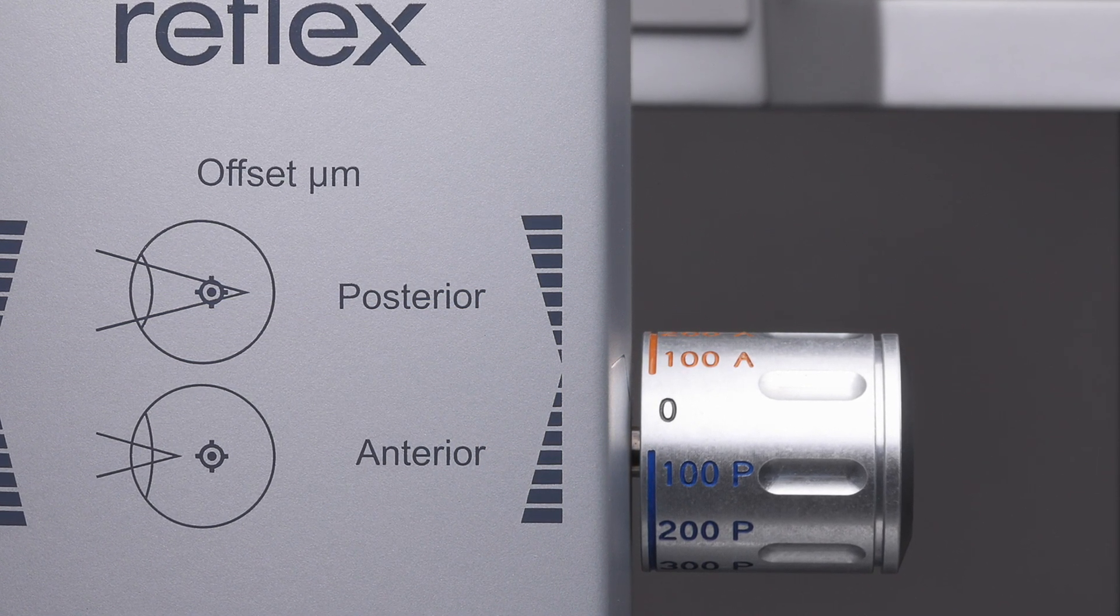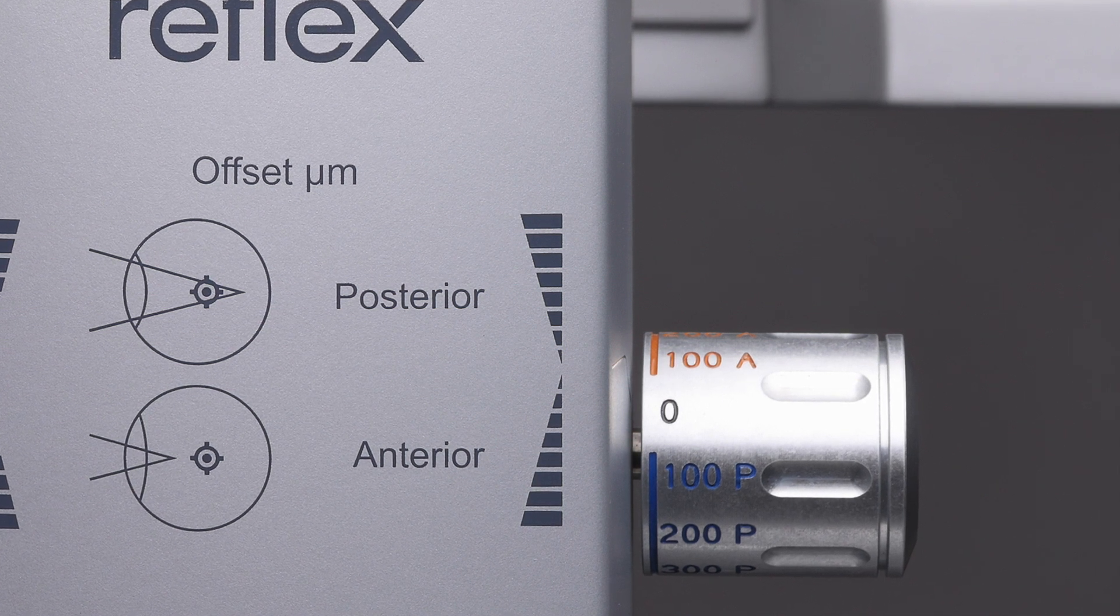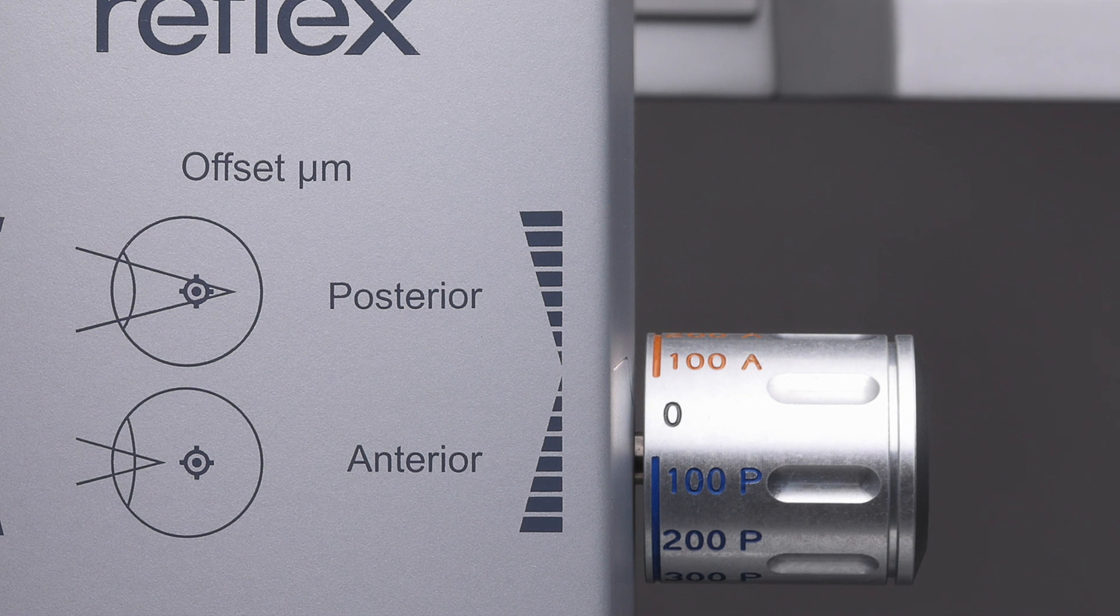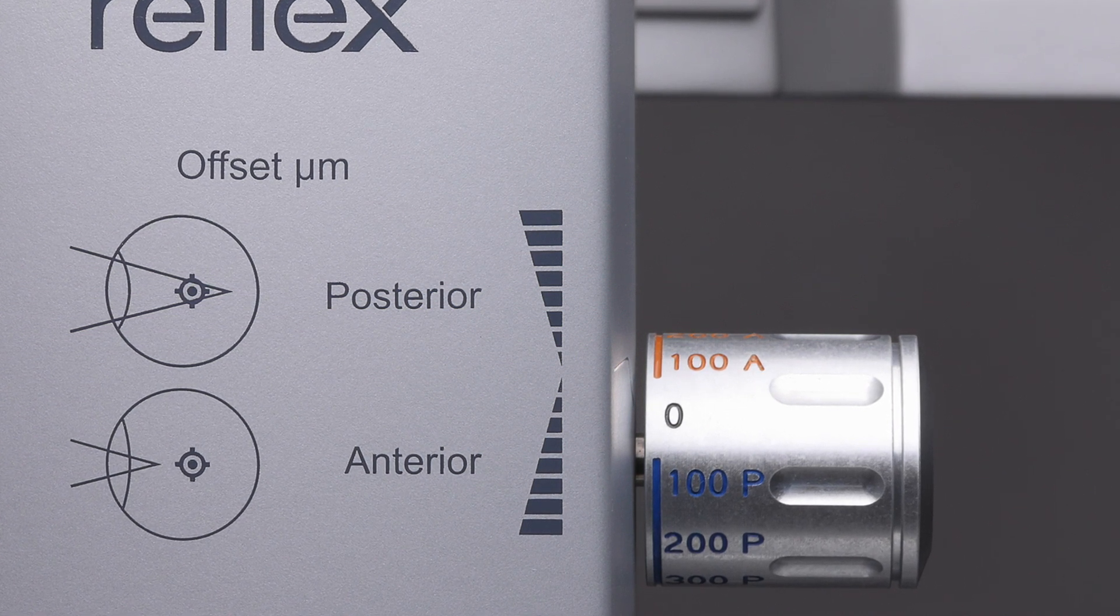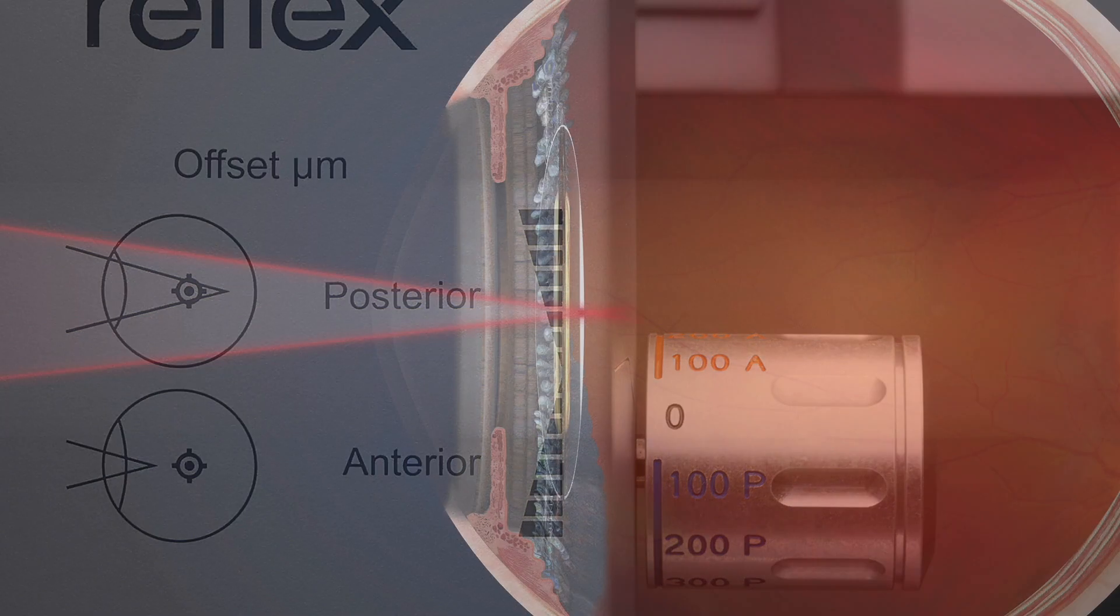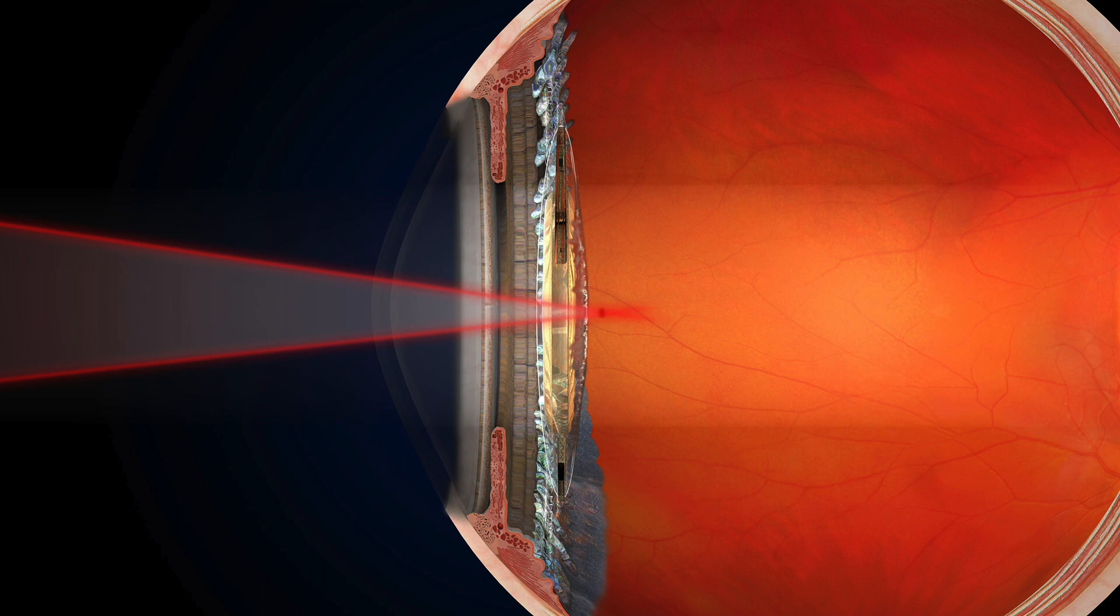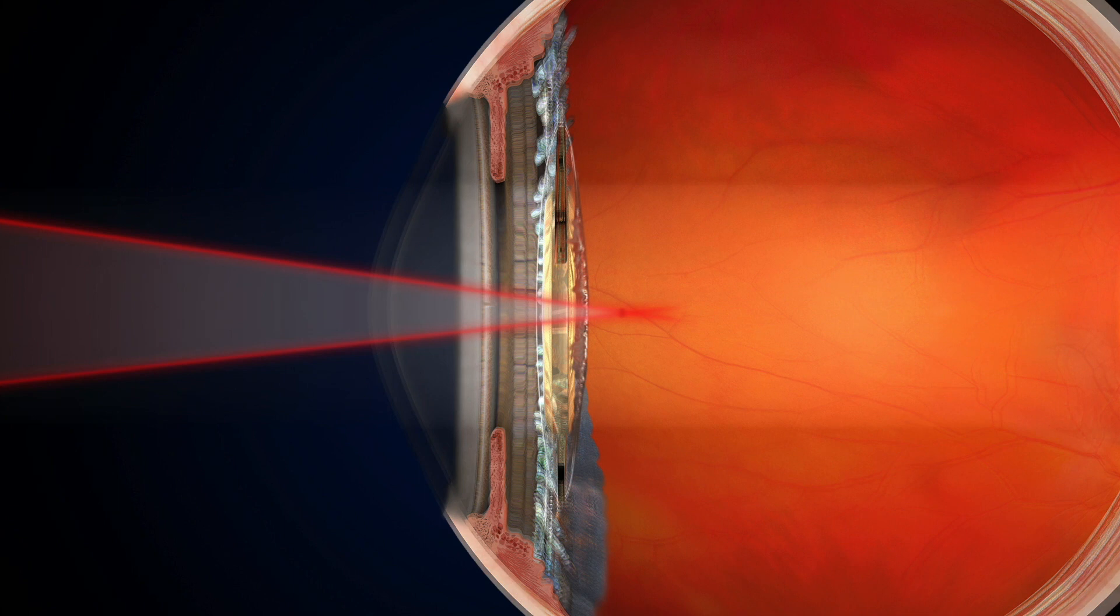Many lasers include a manually controlled offset allowing you to move the treatment beam posteriorly towards vitreous by 0.1 to 0.5 millimeters. I personally do not use this option but focus the laser manually 1.5 to 2 millimeters behind the capsule by moving the slit lamp towards the patient. Using this technique, IOL damage is virtually impossible.